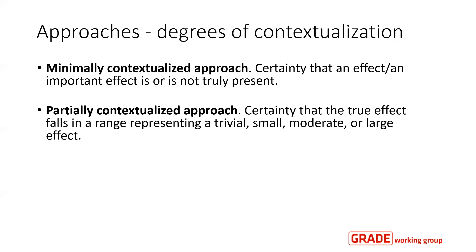If we use the partially contextualized approach, we take a step further in specifying the magnitude of the effect. We rate our certainty that the true effect in this outcome is trivial, small, moderate, or large, and the range is set for these. The magnitudes of effect will depend on the importance we place on this particular outcome.